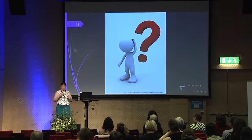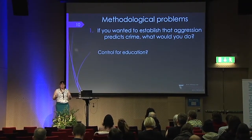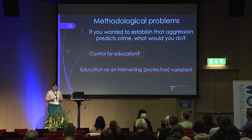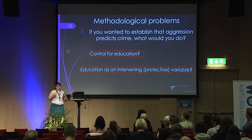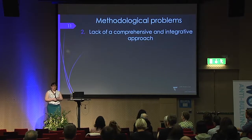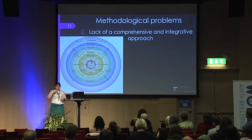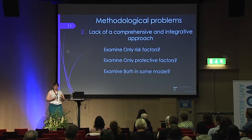Reading this literature got me thinking about some methodological problems I encountered. The first is: if you want to establish that a risk factor predicts an outcome, what would you do with protective factors that seem to reduce that effect? Would you control for education as a protective factor, or use it as an intervening or protective variable? Many researchers would just control for education to partial it out of the equation because they want to establish that aggression predicts crime. For the purpose of my talk today, I am using education as a protective or intervening variable.